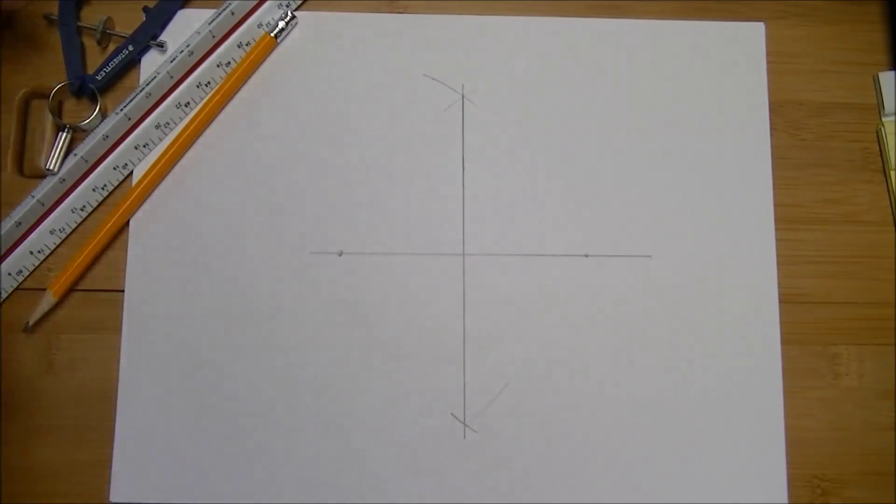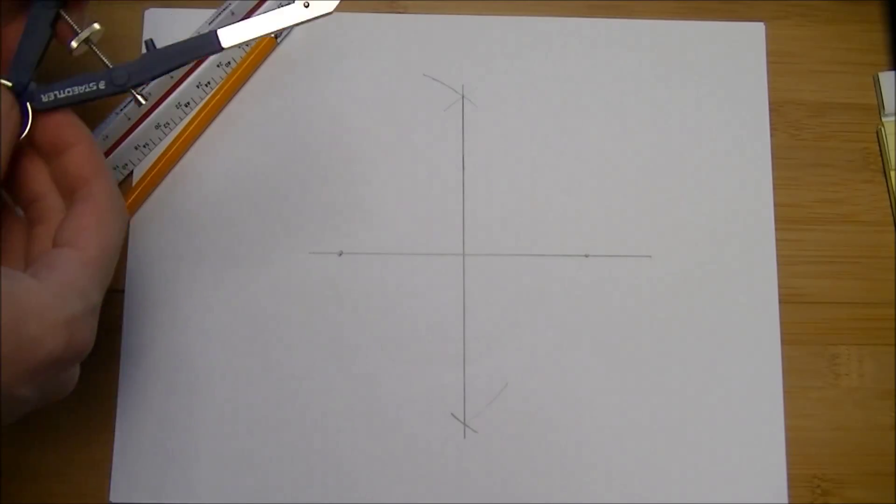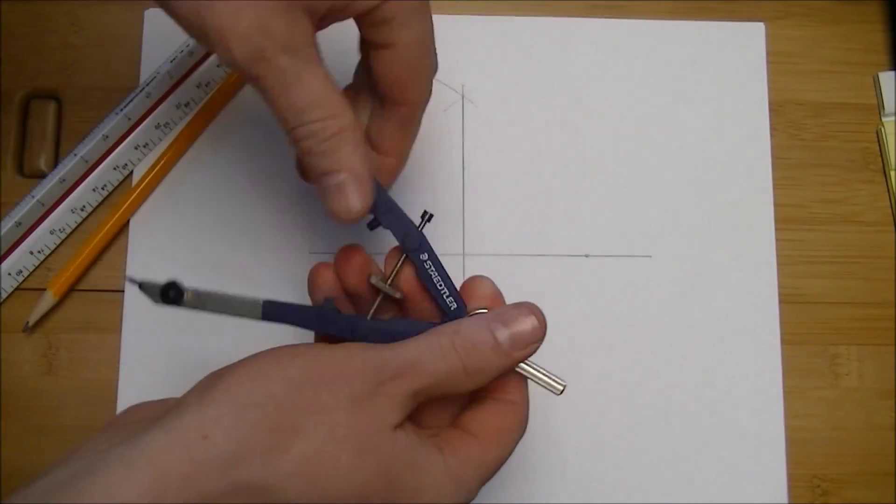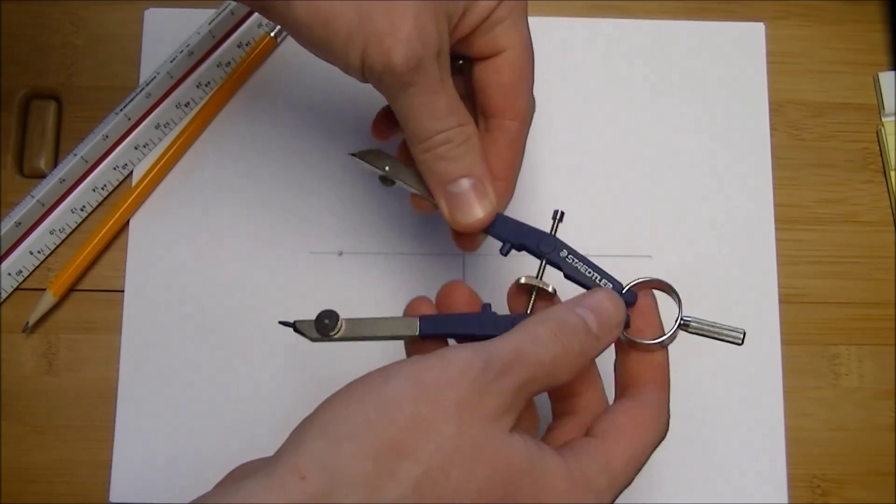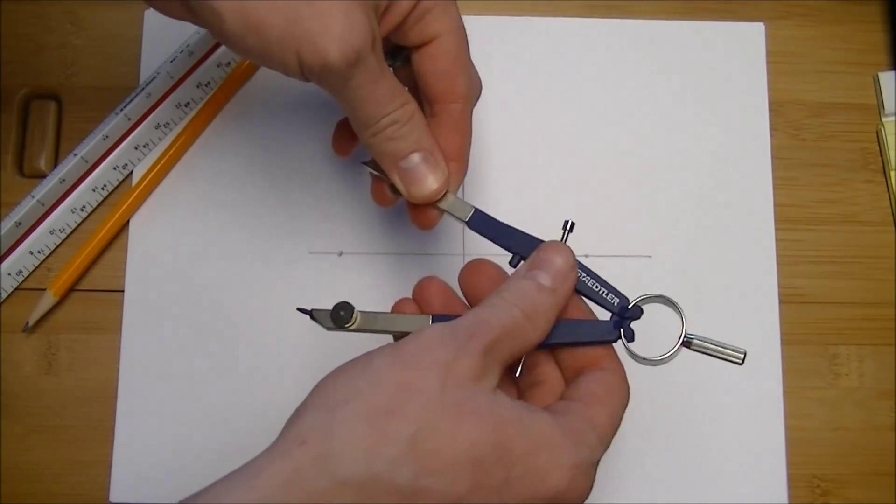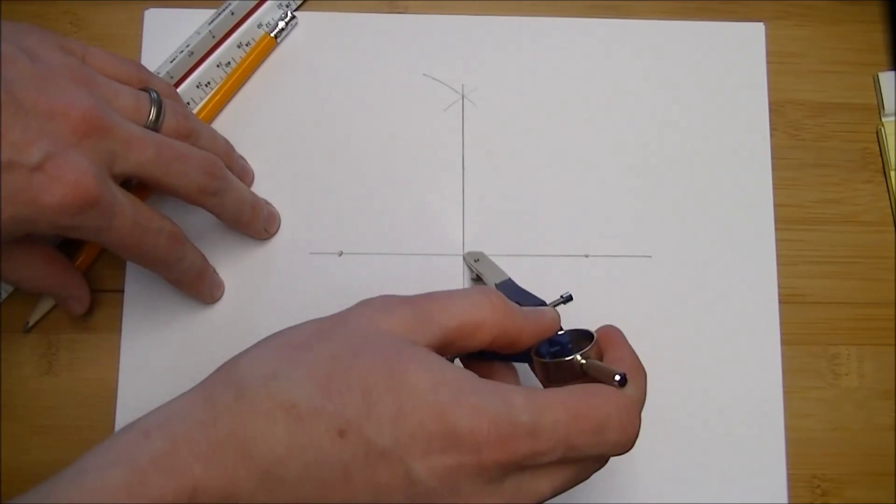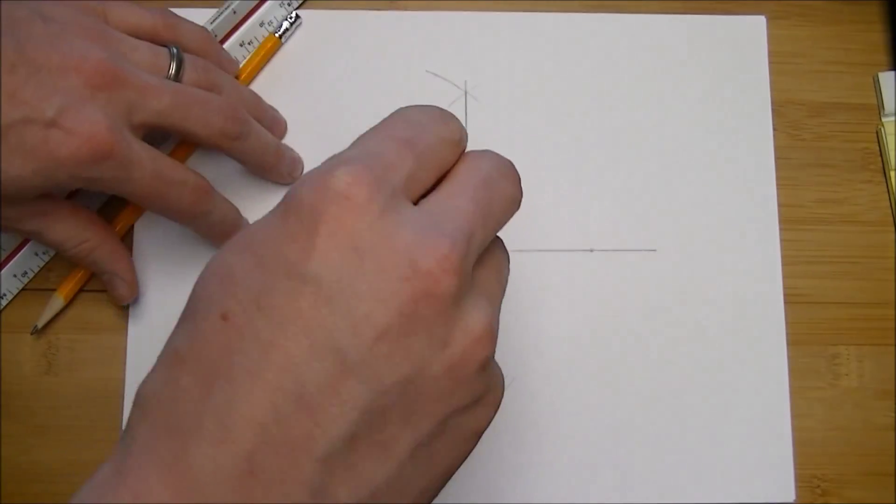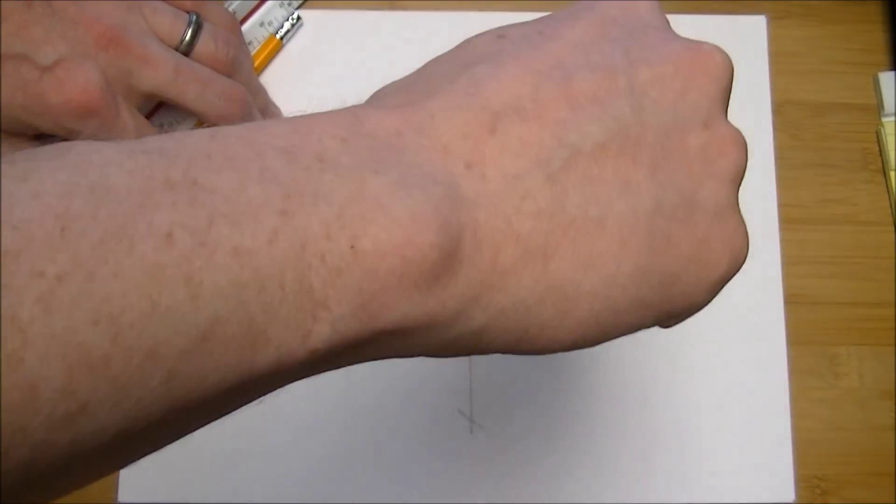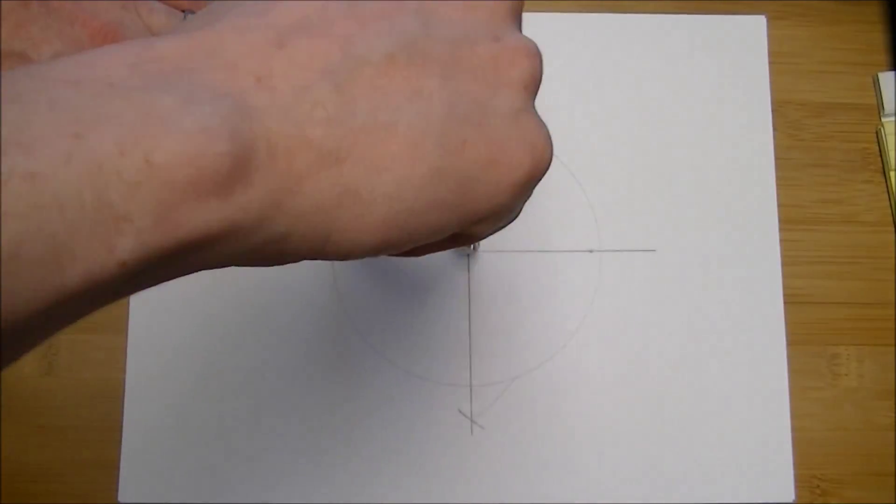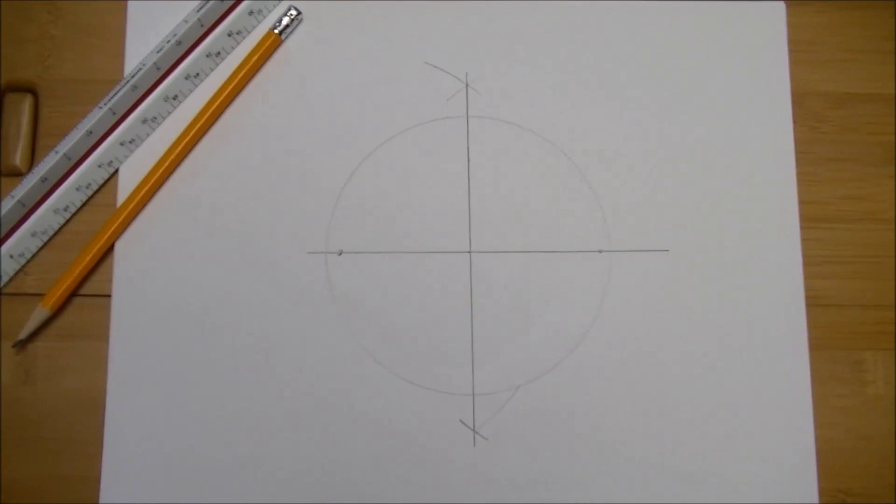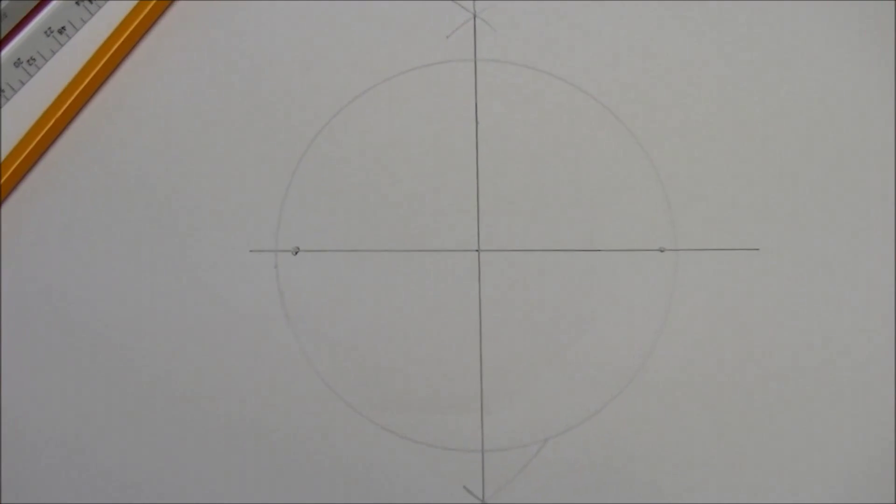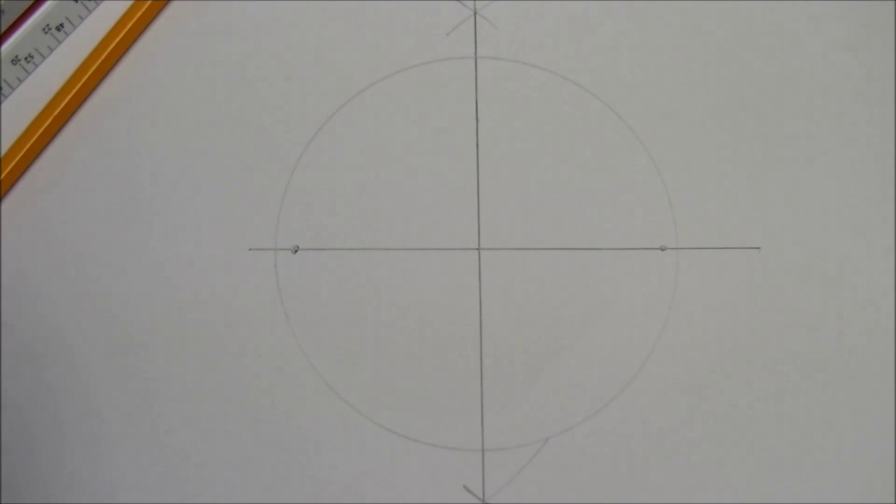I'm going to reduce that down. With the pentagon, we want to start by working with a circle. Everything else that we do is going to be inside of this circle, or at least close to the edges of it.